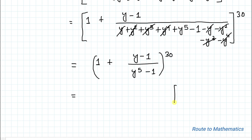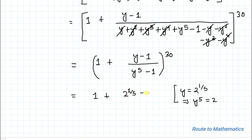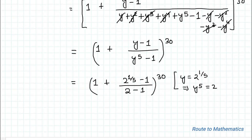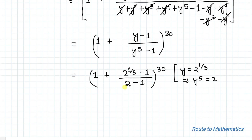We have y equal to 2 to the power of 1/5, which means y to the power 5 equals 2. Substituting this value: we get 1 plus (2 to the power 1/5 minus 1) divided by (2 minus 1), whole to the power 30. Since 2 minus 1 equals 1, the denominator becomes 1, so we have 1 plus (2 to the power 1/5 minus 1), to the power 30.